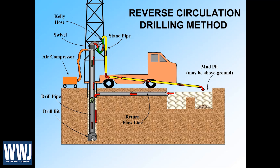For larger boreholes like that, if we were to do it with direct mud rotary, we could, but we would have to build the volume of fluid, and that would cost more money — which is why flooded reverse is cost-effective. We're spending less money on drilling fluid and using a method that allows us to drill with basically clear water.